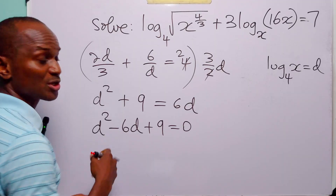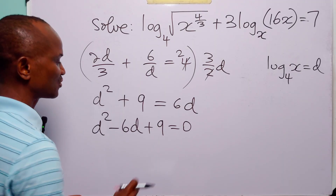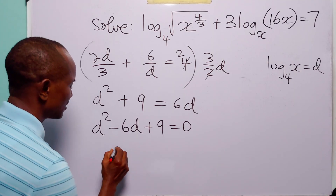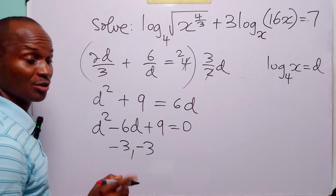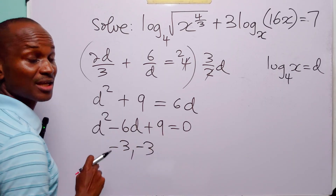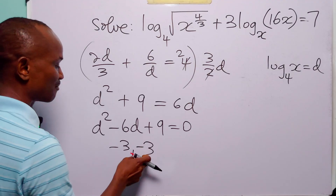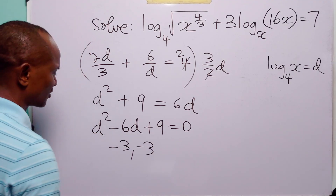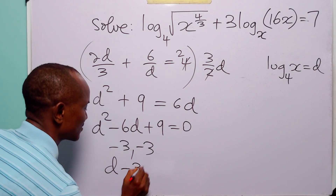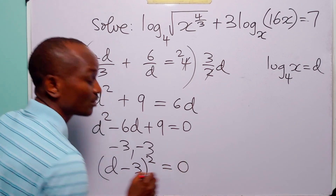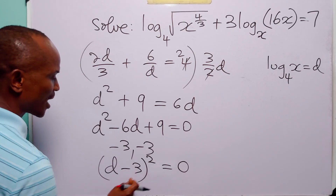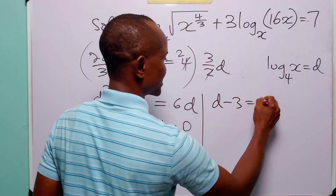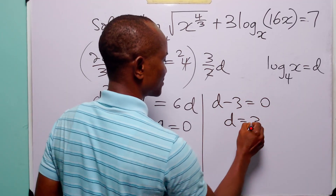We can solve this quadratic equation by factorization. All we have to do is find the factors of 9 that add up to minus 6 — and of course they are going to be minus 3 and minus 3, because minus 3 times minus 3 is equal to plus 9, while minus 3 plus minus 3 is equal to minus 6. So when we factorize this, we have d minus 3 squared is equal to 0. Taking the square root of both sides, we have d minus 3 is equal to 0.